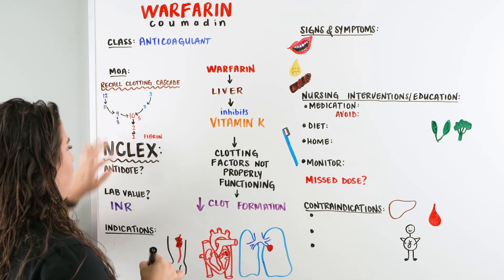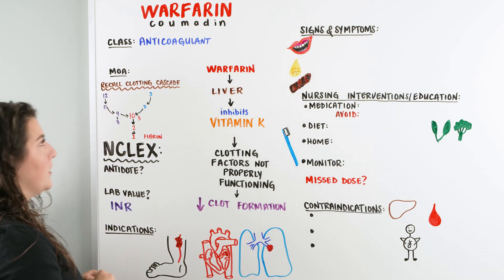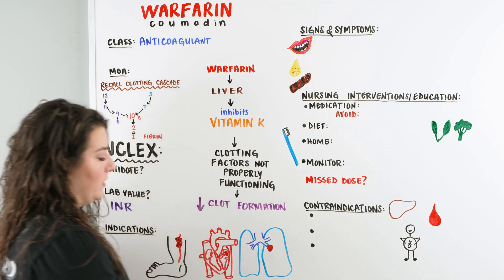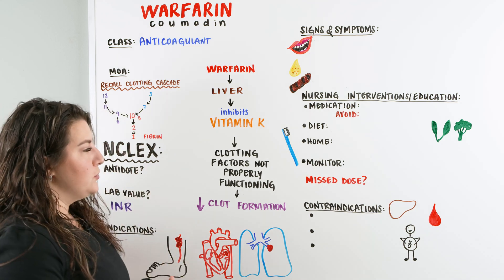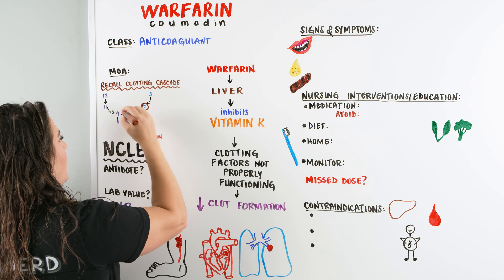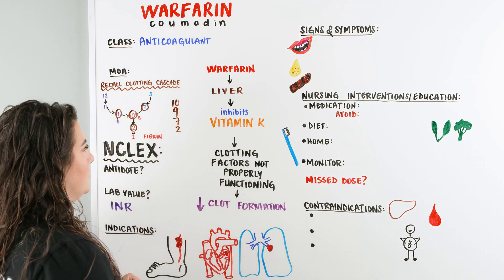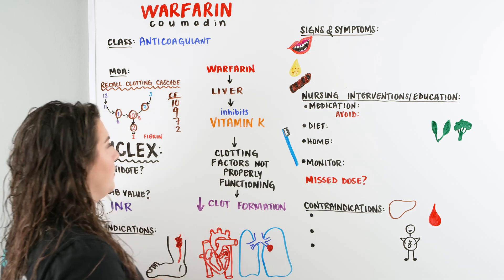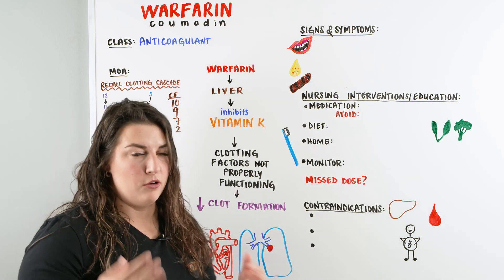Normally when our body clots, this is what's occurring. There are many clotting factors with all these different numbers, and as they work through this cascade, we eventually have a clot that forms. But with warfarin, we have a couple of different inactivations — clotting factors that aren't properly functioning — and those are 7, 9, 10, and 2.